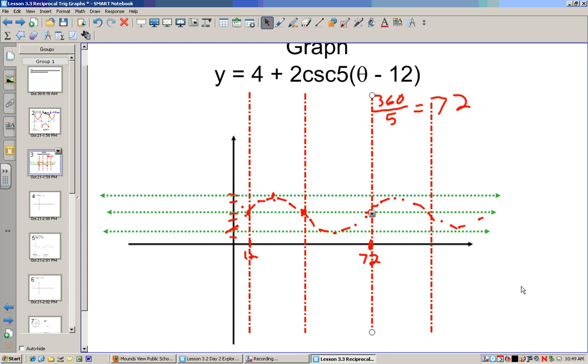Alright, so now once we have our vertical asymptotes in place, we can move this one over a little bit. Now we look at our peaks, and now I'm going to draw in blue my cosecant graph. And then we look at the low points of sine, and draw our cosecant graph. So keep going to the right and to the left, but the blue graph is really what we're concerned about.